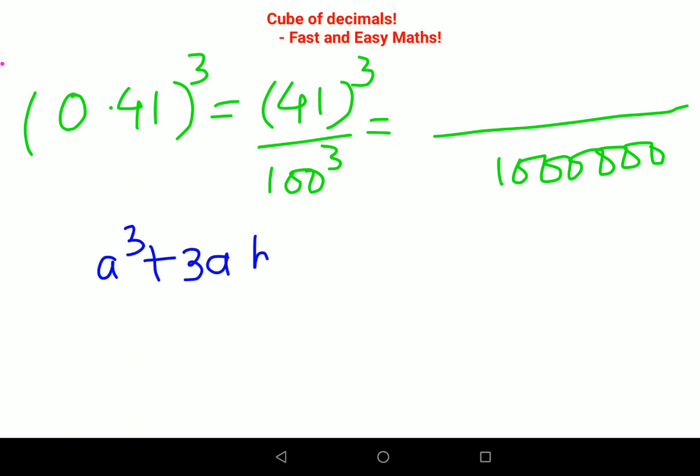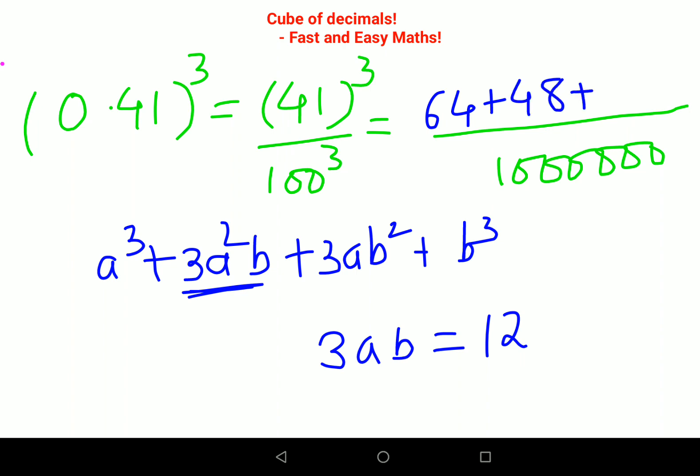Again, let's do the normal logic: a cube plus 3a square b plus 3ab square plus b cube. So a cube is 64. First we'll do 3ab: 4 into 1 into 3 gets you 12. 12 into 4 because you want 3a square b, so 12 into 4 gets you 48. 12 into 1 gets you 12, and 1 cube is 1.